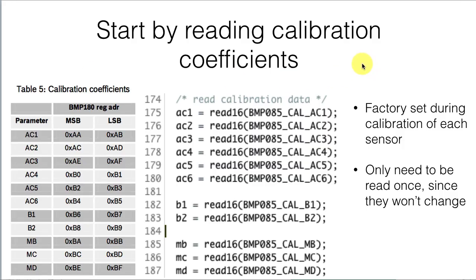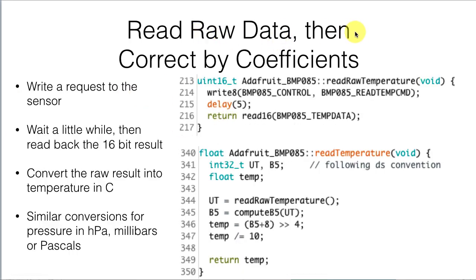To use a BMP-180, the first thing you do is ask it for its calibration coefficients. Looking at the library code, it immediately reads 16-bit values from the sensor to get those calibration coefficients — you only need to read these once when you connect to the sensor, since they were set at the factory and won't change. Then you read the raw data and correct it mathematically using those calibration coefficients. You write a request out to the sensor at its address, then wait about five milliseconds using a delay call, and read back a 16-bit value.